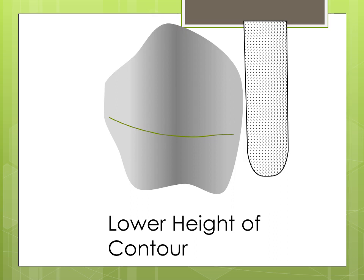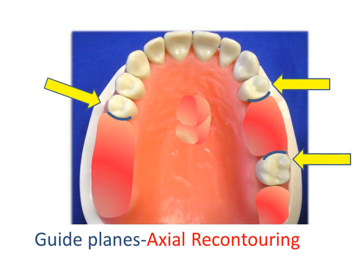Of course, the flexible retentive tip should be in the gingival one-third. For purposes of illustration, the guiding planes are in blue, and areas to be re-contoured are in red. One should mark these areas on the diagnostic cast.